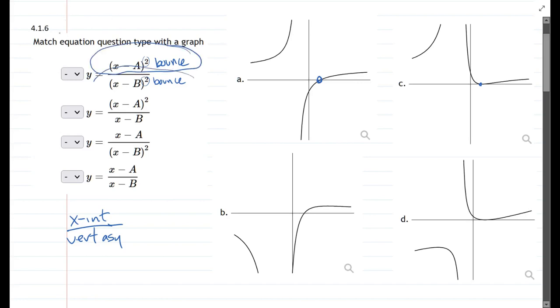Now the vertical asymptote, it's a little hard to see, but it goes up and up. It also bounces. So that means graph C is the first one here.